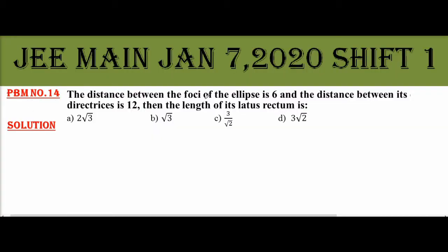Problem number 14: The distance between the foci of the ellipse is 6 and the distance between its directrices is 12.